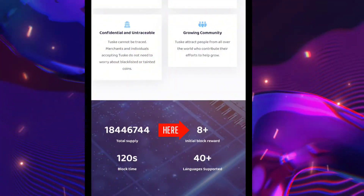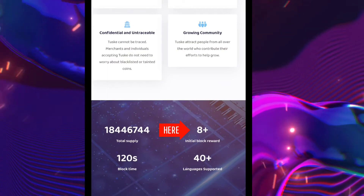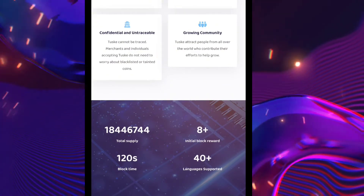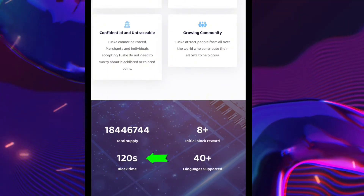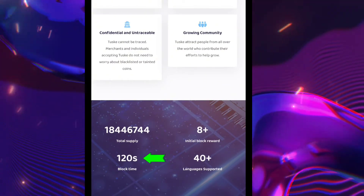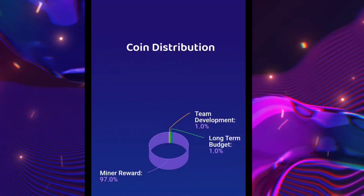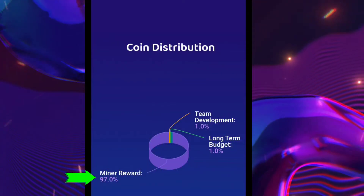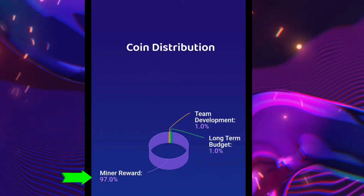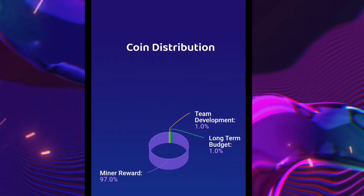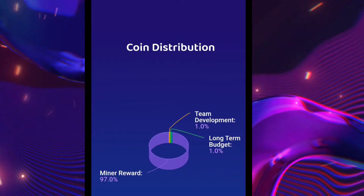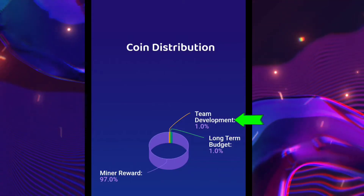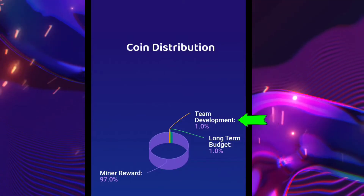Today, the block reward is 8 Twoski coin, and the block time is 120 seconds. As you can see, 97% of the coin is allocated to mining rewards, and the remaining 3% is for dev and other things for this project.